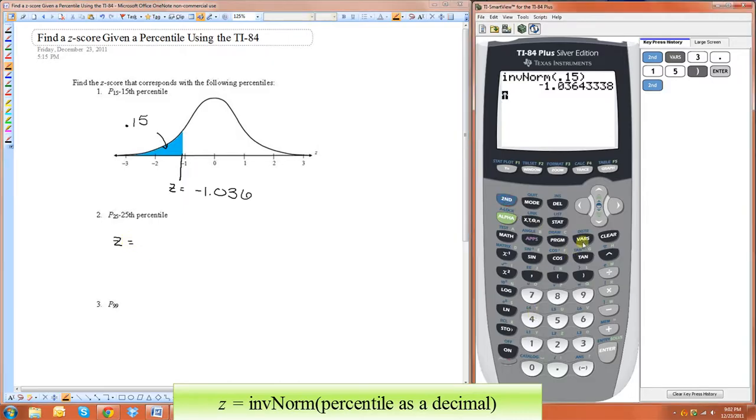Just do the same function, 0.25. And so this is going to be negative 0.674.